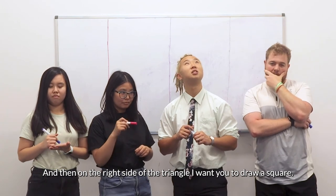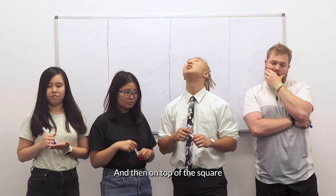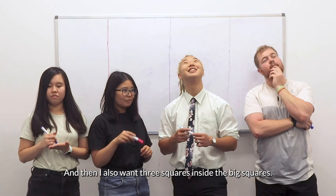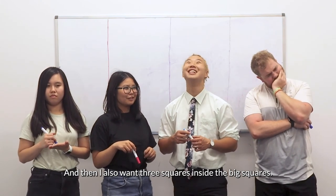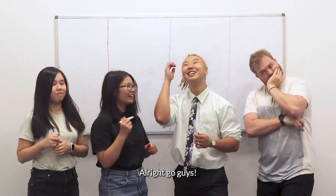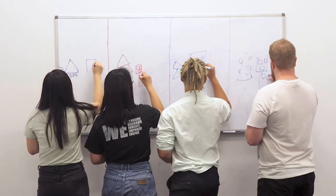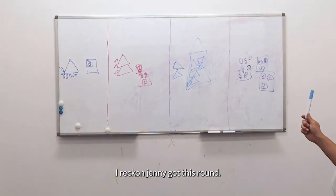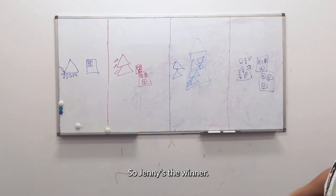And then on the right side of the triangle, I want you to draw a square. And then on top of the square, there is another square on the top left corner. And then I also want three squares inside the big squares, and on those three squares, I want a cross on it. Alright, go! I reckon Jenny got this one. So Jenny is the winner.